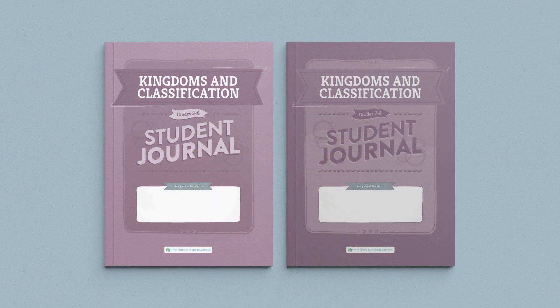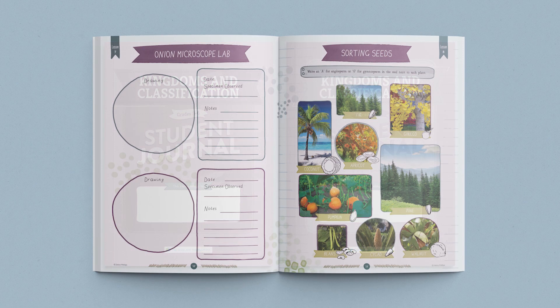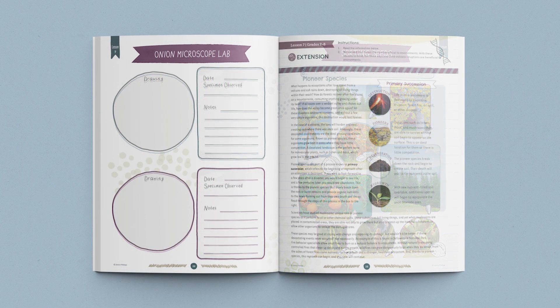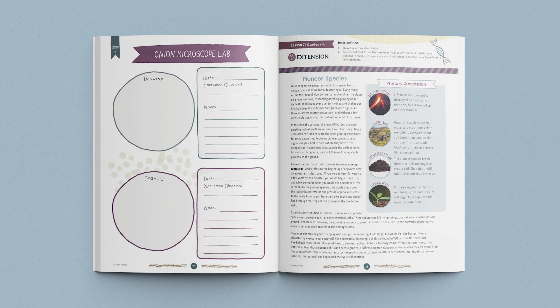Interactive student journals are divided into two age categories: one for grades 3 through 6 and one for grades 7 and 8. The student journals include age-appropriate activities, games, and worksheets. The older journals also include a lesson extension for each lesson, allowing your older students to dive deeper into the lesson concepts.